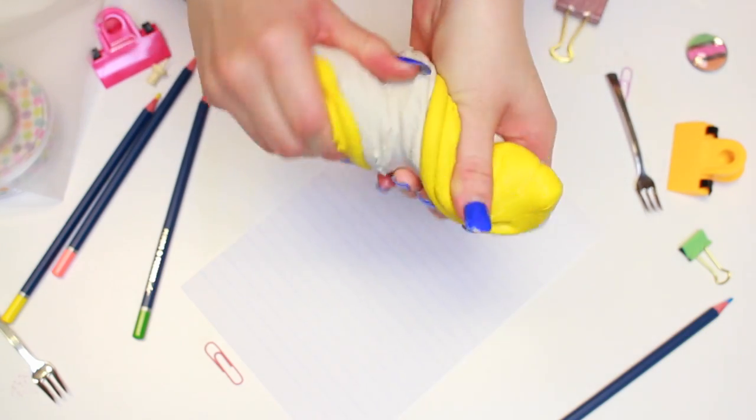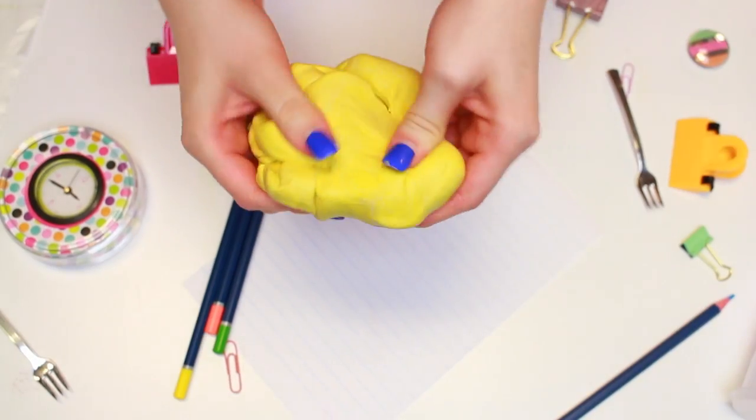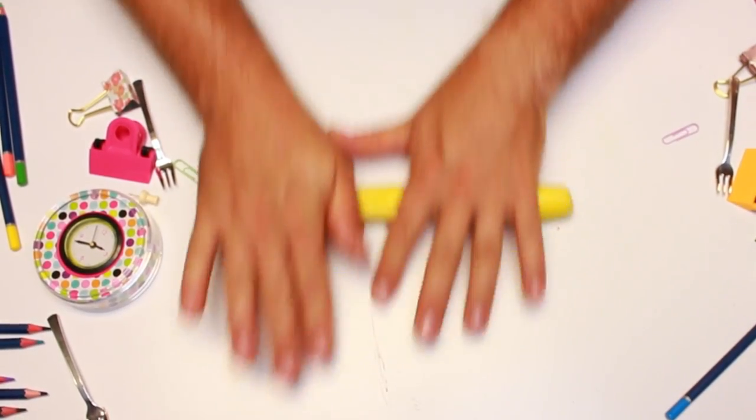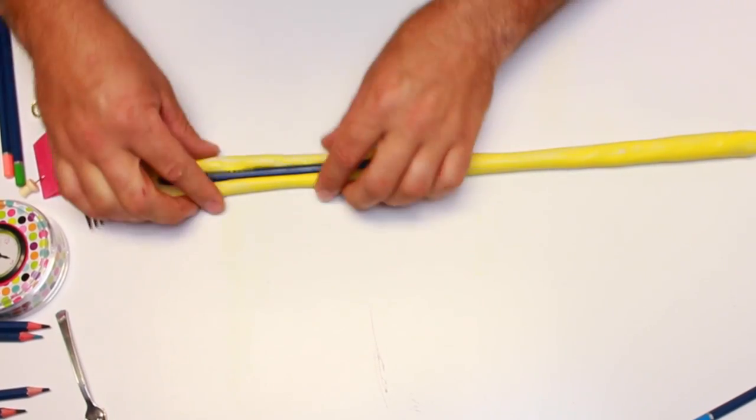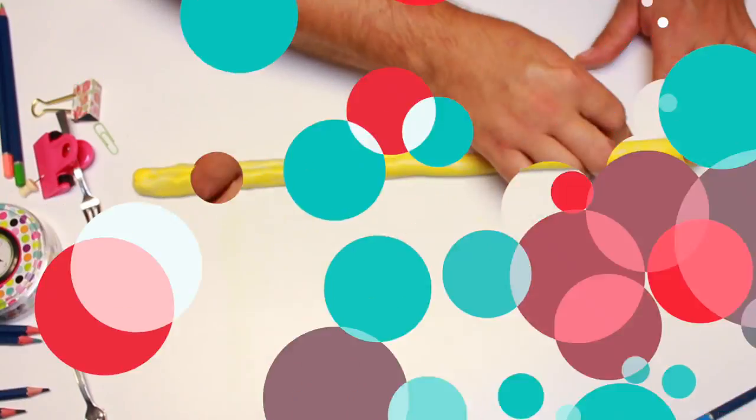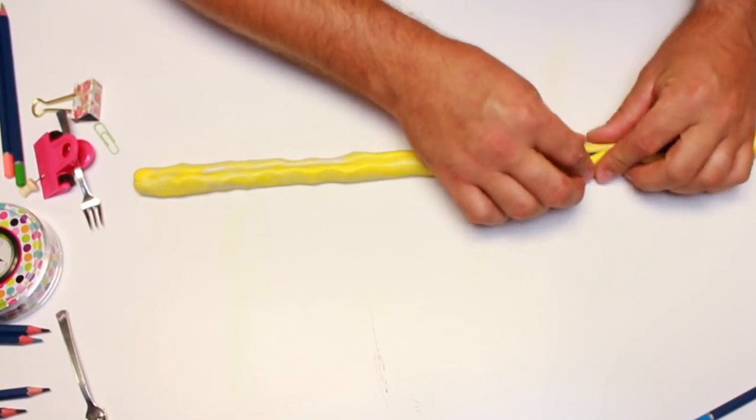So I mixed equal parts of yellow and white together and quickly had David press the pencils and erasers down into the molds. I suggest keeping your molds as thin as possible so that way they are easier to bend and work with.